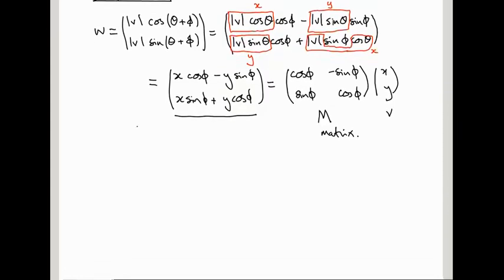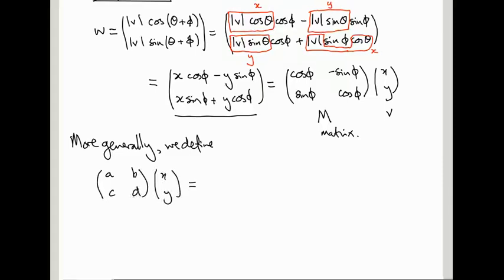And when you see an expression like this, you should just think it's a shorthand for exactly what I've written over here. In other words, it's keeping track of the coefficients cos phi, minus sine phi, sine phi, cos phi, of X and Y in a two by two grid, in exactly the way they appear in this equation here. So more generally, we define, given a two by two grid of numbers A, B, C, D, and a vector X, Y, we define the product of this two by two thing into the vector to be a new vector which is A X plus B Y, A times X, B times Y, and then C times X plus D times Y.